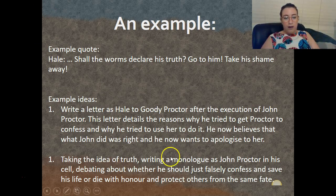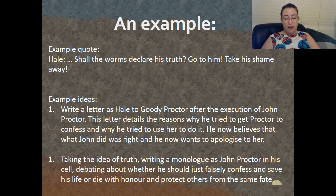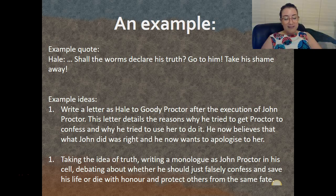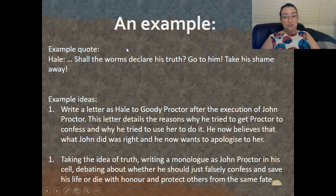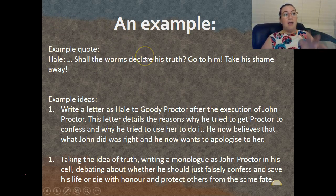Taking the idea of truth, I wanted to write a monologue as John Proctor, because Proctor is all about truth — he values truth more than anything. Even though he knows Elizabeth is going to make his life hell, he tells his wife he's been cheating on her. That's a man who really believes in truth. So: a monologue as John Proctor in his cell, debating whether he should falsely confess and save his life, or die with honour and protect others from the same fate — addressing that idea of truth. I'm taking the idea, not directly taking the quote, and that's totally okay as long as you're taking the heart of the quote.